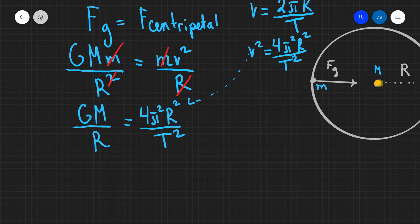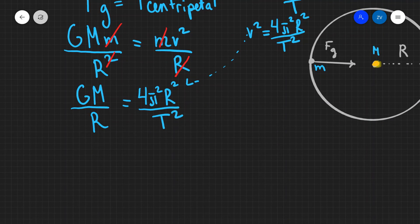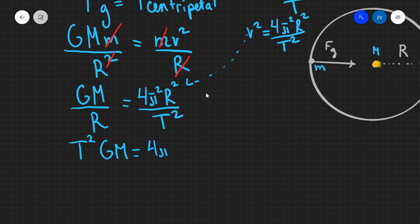We are almost there in deriving Kepler's third law. So all we need to do is just do a little bit of rearranging. So I'm going to bring the t squared onto this side. I'm going to bring the r over there. And what I'm going to get is that t squared GM is going to equal 4π squared. And I'm going to bring the r over on this side.